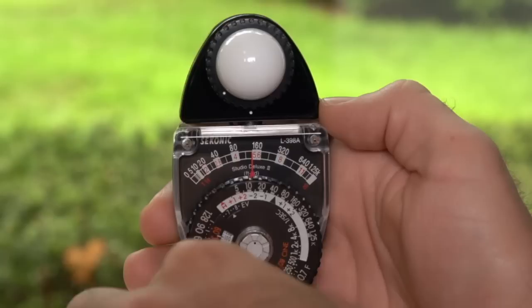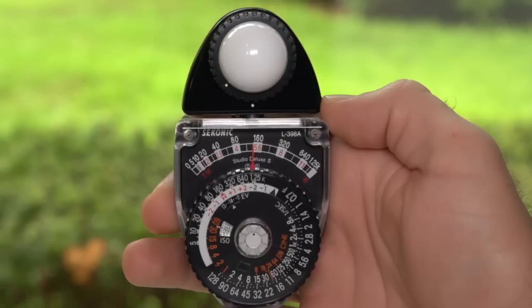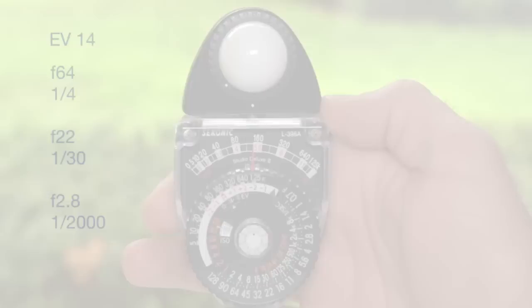Then turn the black dial so that the red pointer marked H on the computer dial lines up with the foot candle number indicated by the needle. As with lower light indoor measurements, you will now have an accurate exposure in EV, as well as numerous aperture and shutter speed combinations that will all give you an accurate exposure when transferred to your camera.